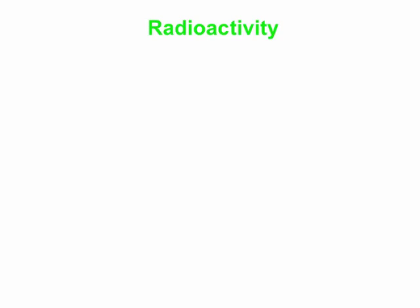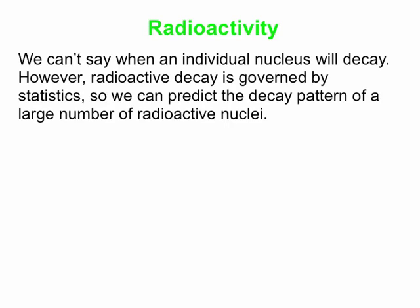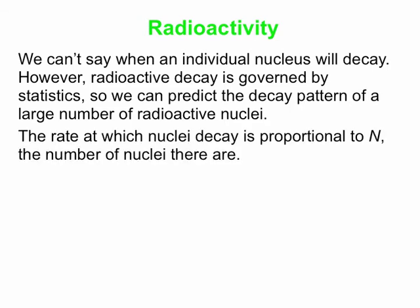So let's get into radioactivity. If you're looking at an individual nucleus, there's just no way to say when that nucleus is going to decay. However, if you have a whole bunch, 10 to the 20 nuclei, a massive number of nuclei, then you can apply statistical rules to predict the general decay pattern for a large number of radioactive nuclei.